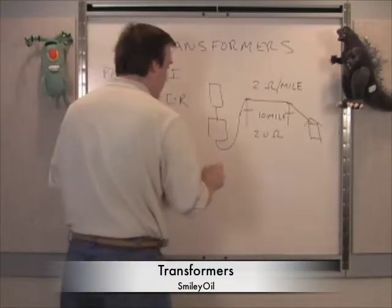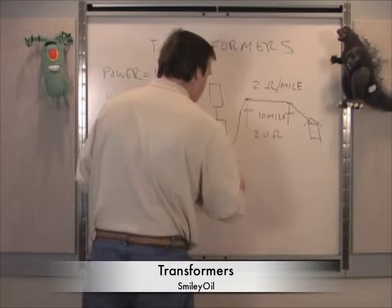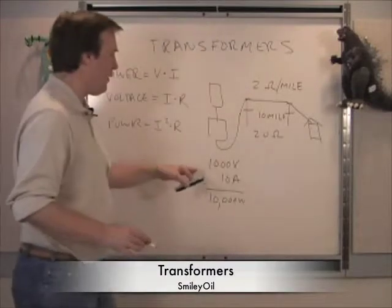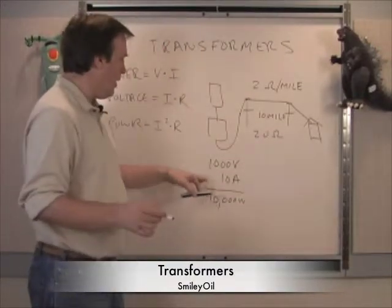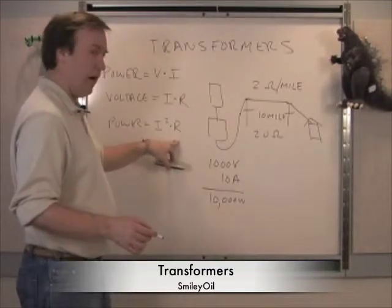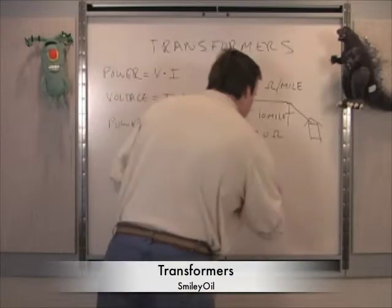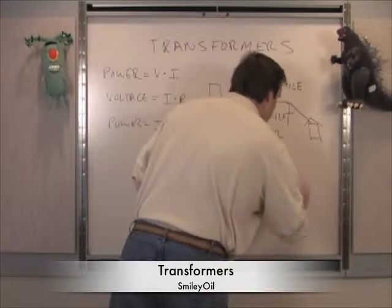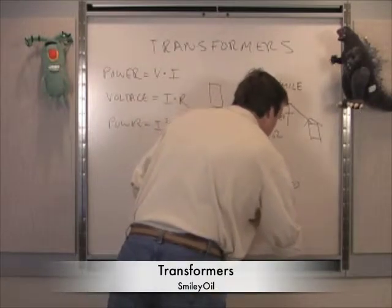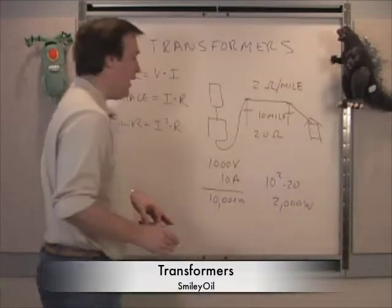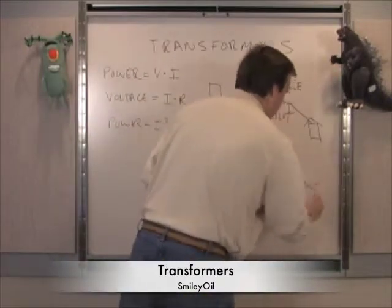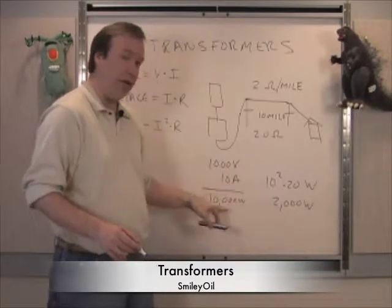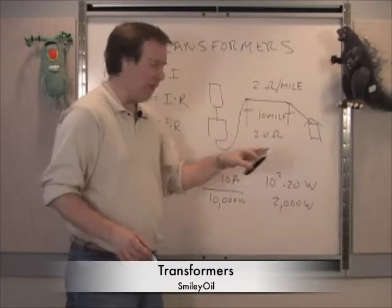Let's try 1,000 volts and 10 amps, which we know is 10,000 watts, and put it through this circuit. Using power equals I squared R, we substitute 10 amps squared times 20 ohms, which equals 2,000 watts. So we are wasting 2,000 watts in transmission from the power plant to your house — only 80 percent remains. That's 10,000 minus 2,000 equals 8,000 watts delivered, without a transformer.